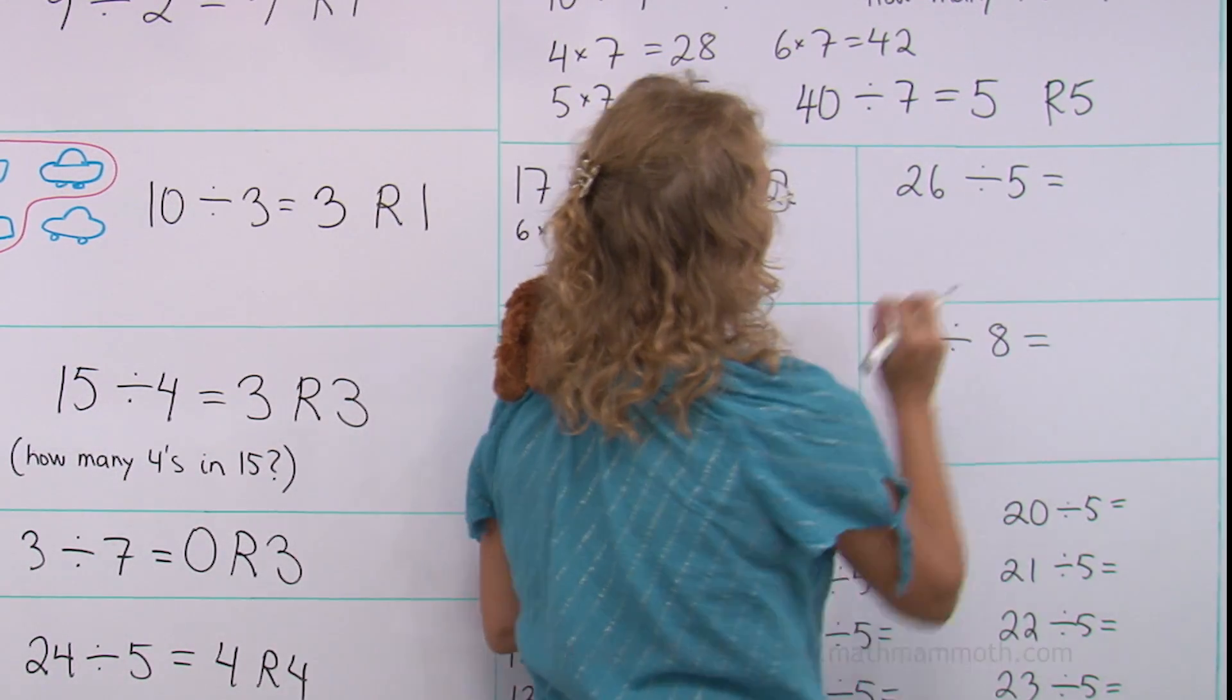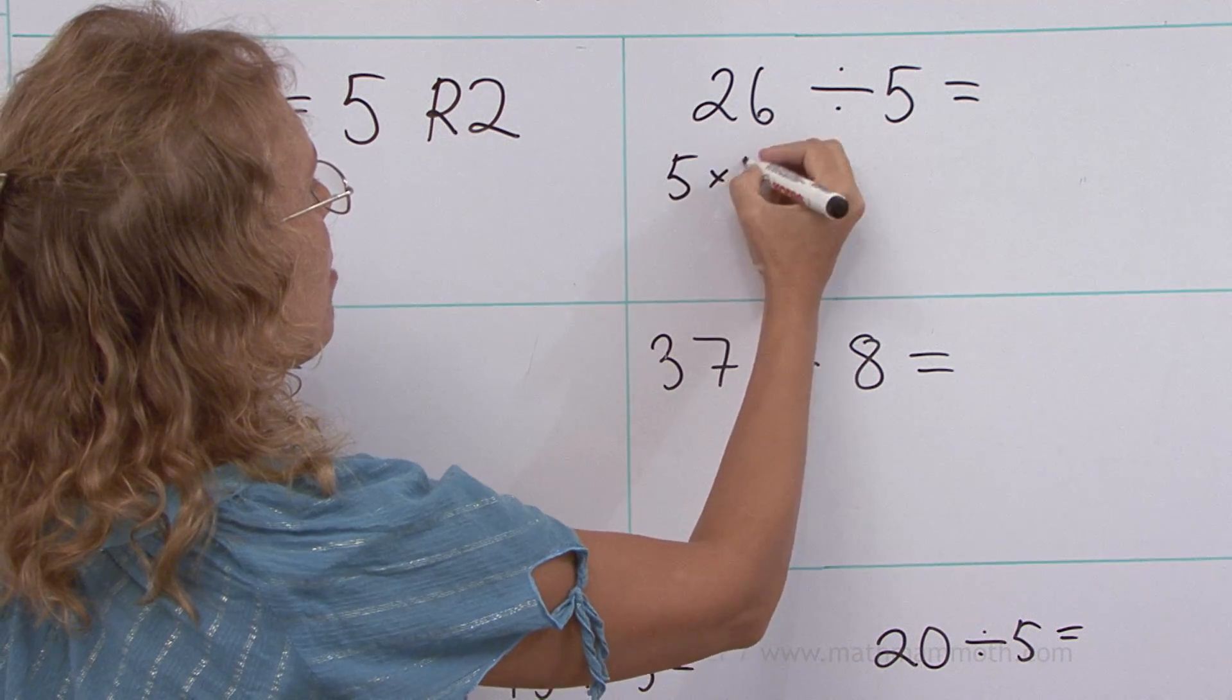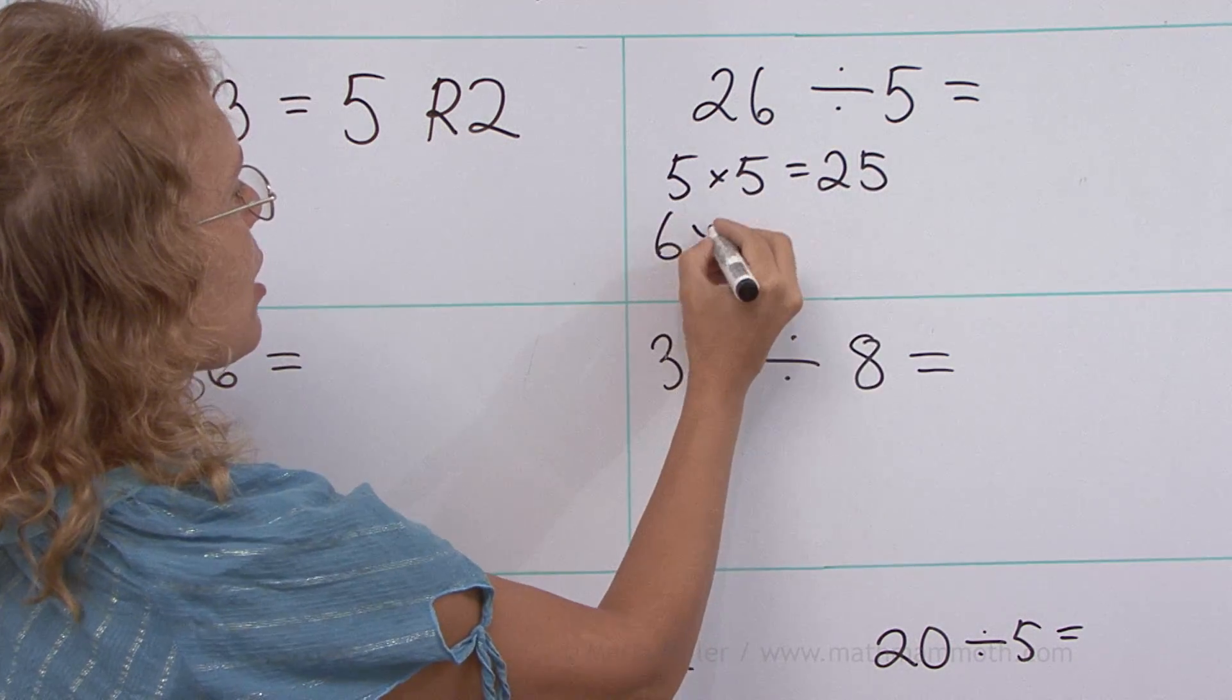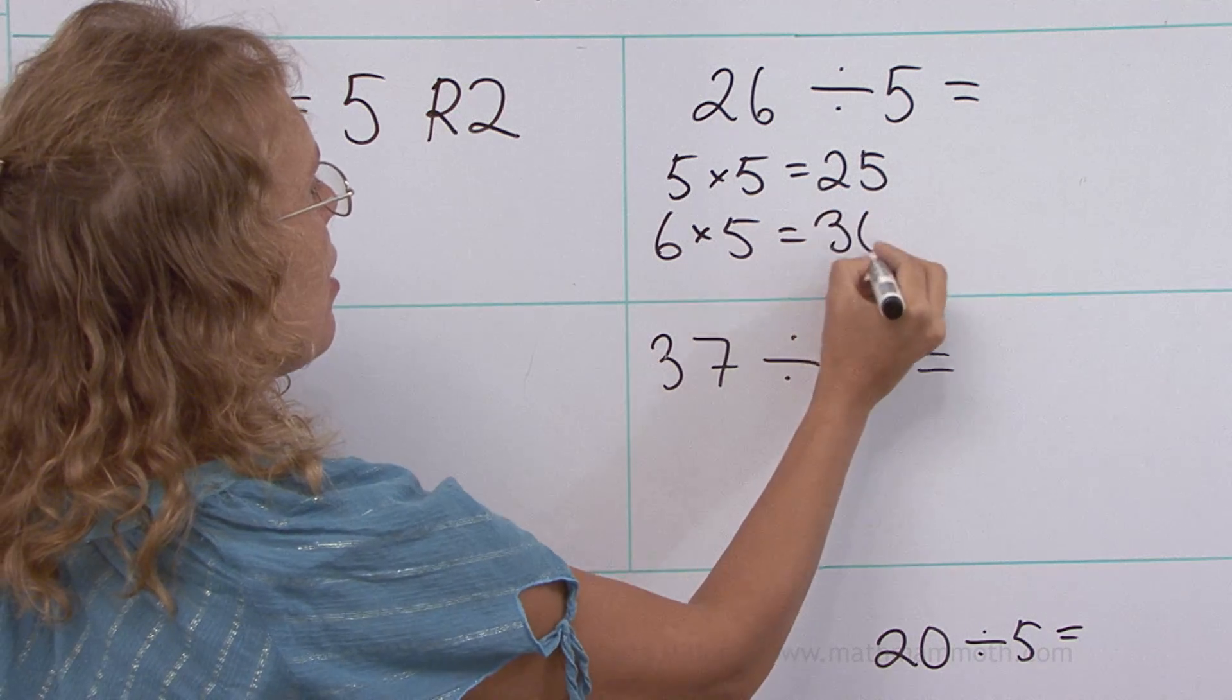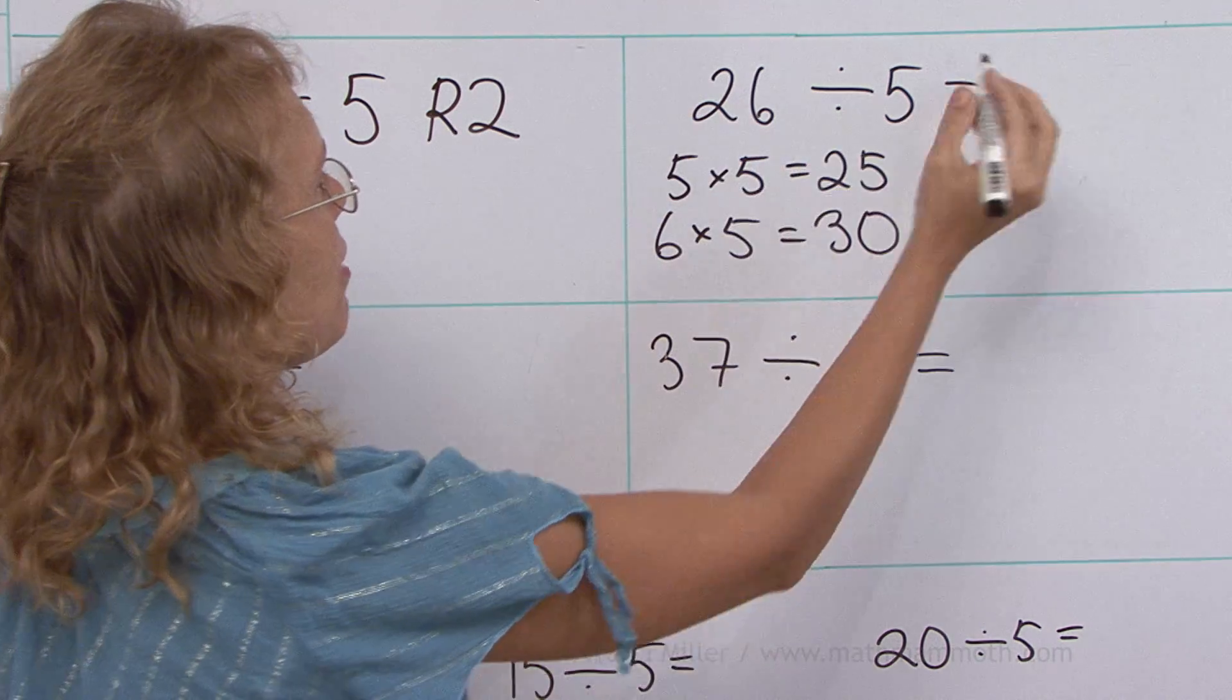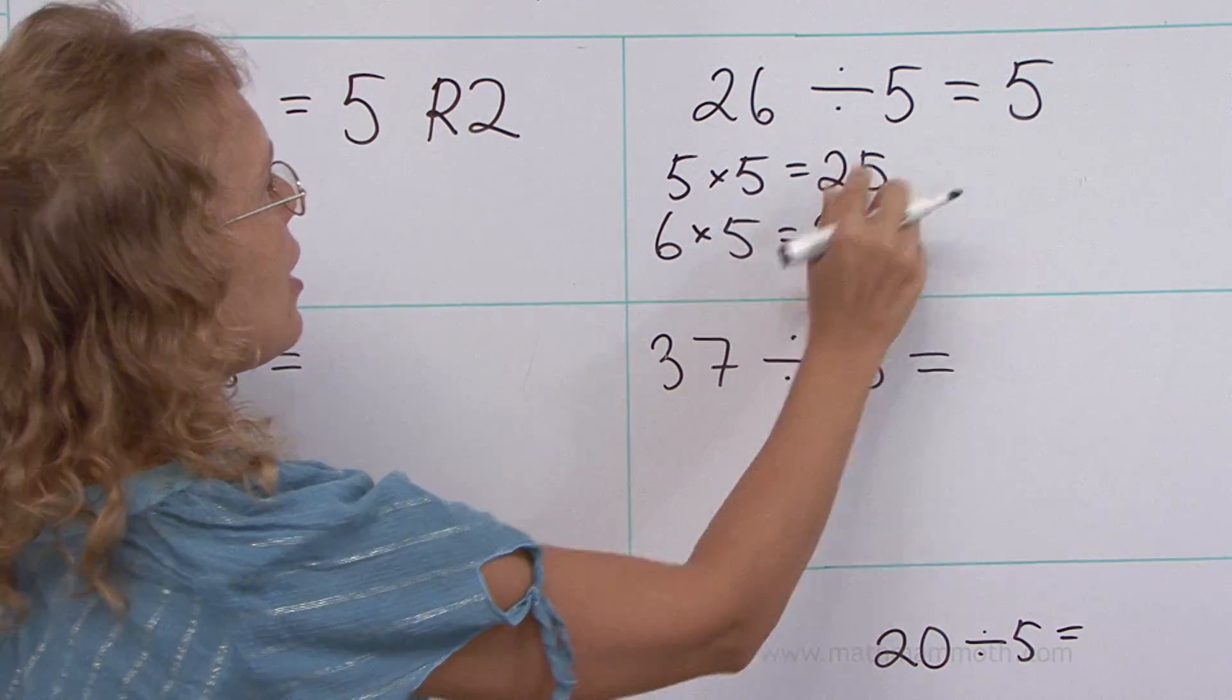Twenty-six divided by five. How many fives are in twenty-six? Maybe you remember five times five equals twenty-five. And then the next one, six times five, would be thirty. So in twenty-six there are five fives. And then the remainder, the difference here is one.